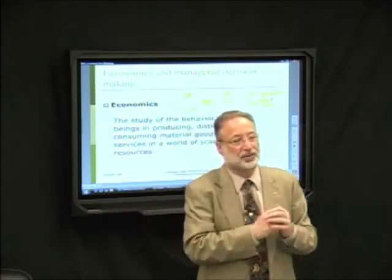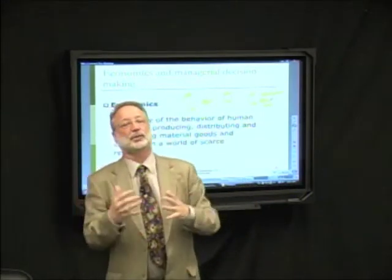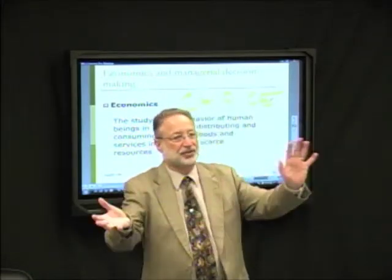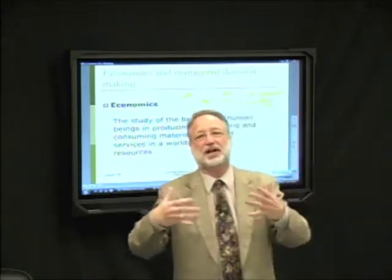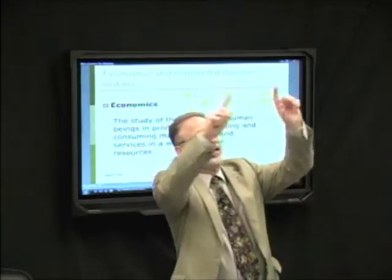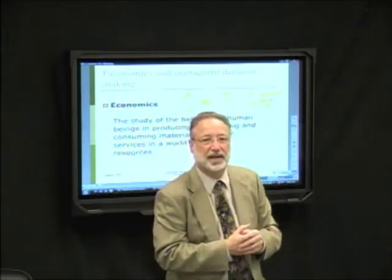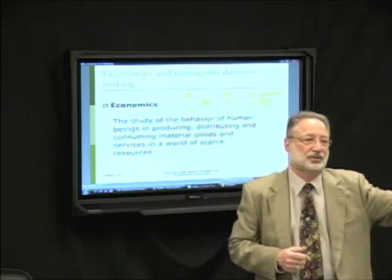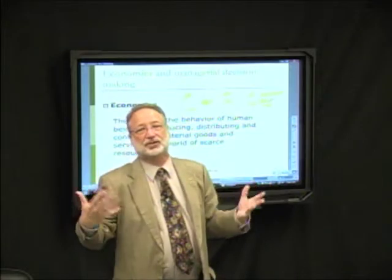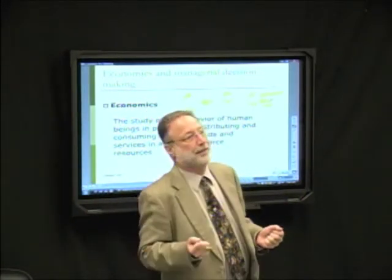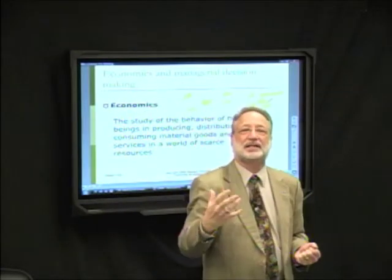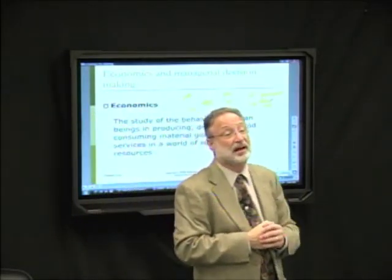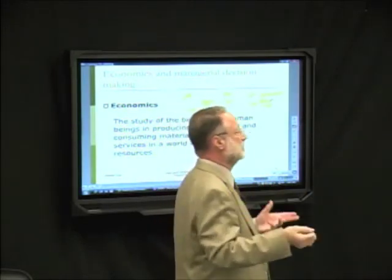That leads us to the third constraint, which as an economist I pay the most attention to: the income constraint. Economics is about purposeful choice — choice that we believe either makes the individual or the society better off — but there are constraints. As managers, we understand that government, moral, and cultural systems constrain our choices. But as an economist and as a manager, what I'm primarily interested in are income and cost constraints. Those are the things I can measure, and those are the things I can definitely see how they impinge my ability to make a decision as a manager.